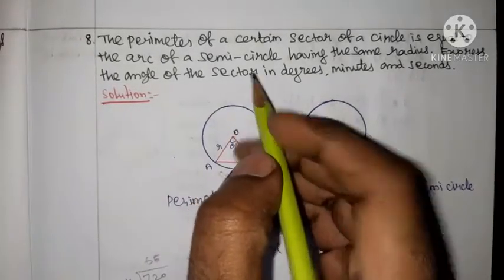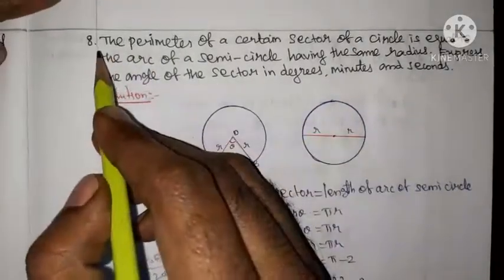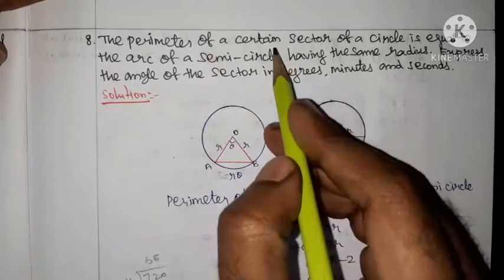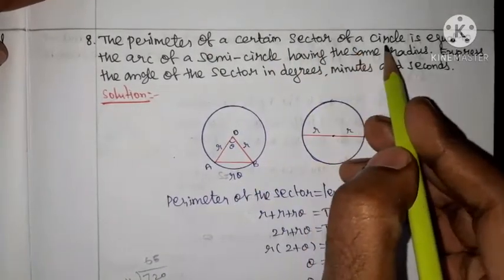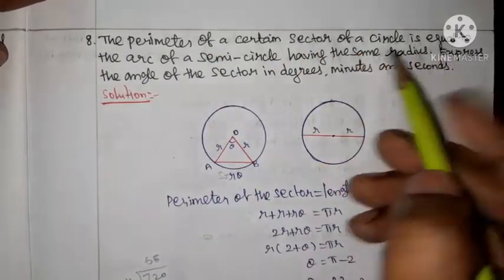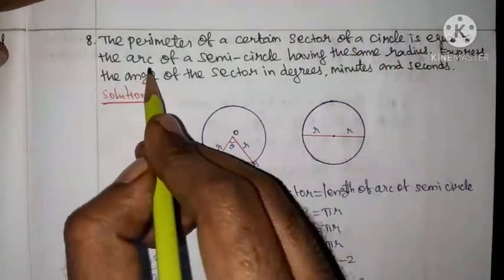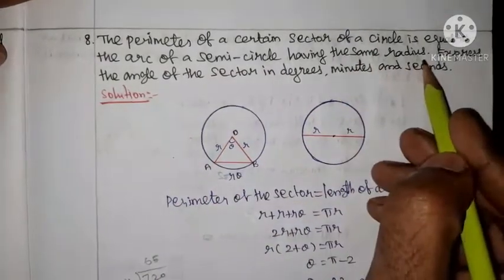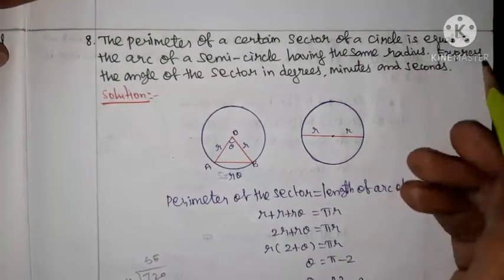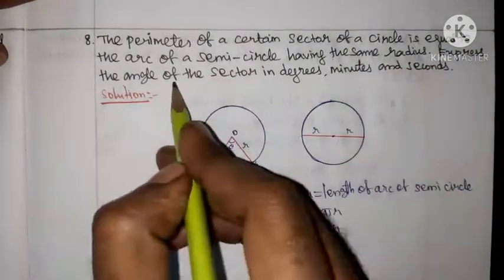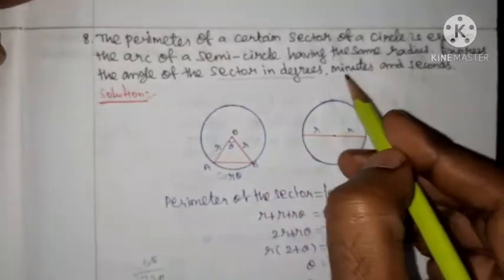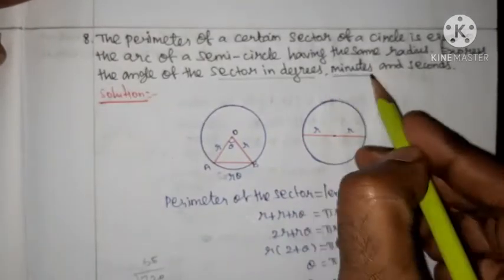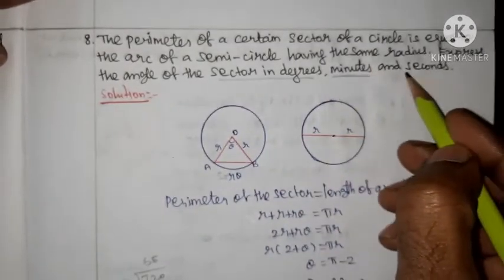Exercise 3.2, question number 8. The perimeter of a certain sector of a circle is equal to the arc of a semicircle having the same radius. Express the angle of the sector in degrees, minutes, and seconds.